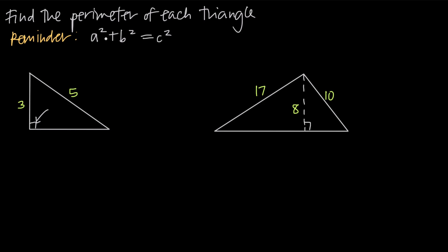Remember that the Pythagorean theorem tells us that a squared plus b squared is equal to c squared, where a and b are the lengths of the two legs and c is the length of the hypotenuse. So if we say that three is one of the legs and plug that in for a, we're going to get three squared. b is the length of the unknown leg, so we'll leave that as b squared.